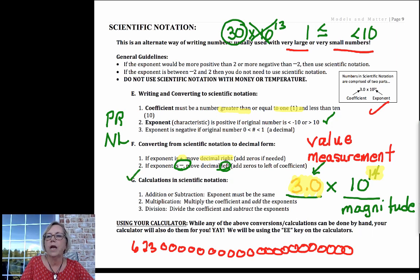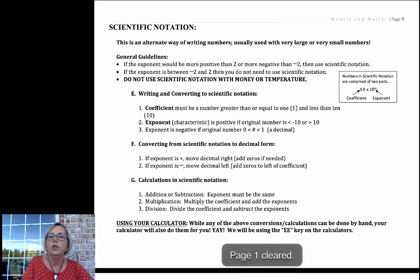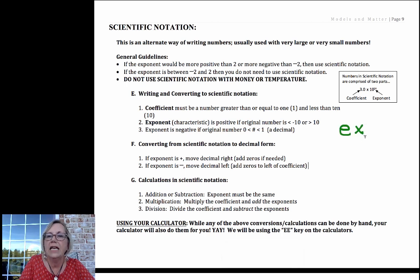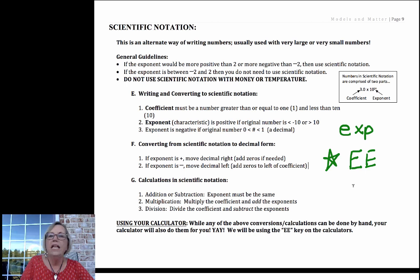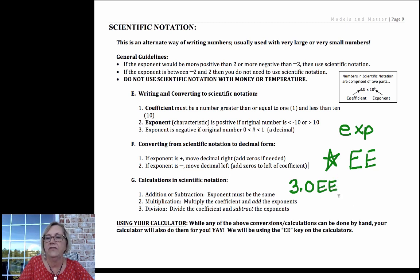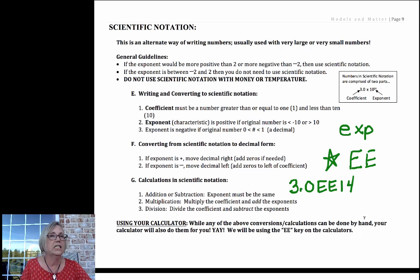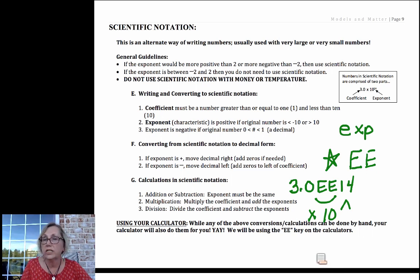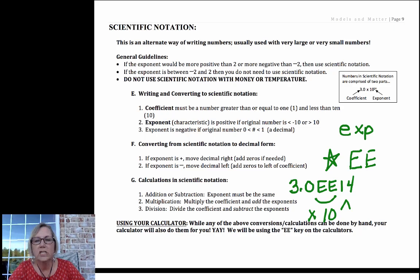One word of caution: I'm going to go over how to do these without a calculator. But when you use a calculator, look for either an exponent key or, much more likely, an EE key. That EE key takes care of the times and the 10. So for 3.0 times 10 to some power, I'd type 3.0, then hit EE, then type the exponent — no multiplication sign, no 10, no caret. If you don't do this, you may be adding factors of 10, especially during division. Do it by hand first, then check with your calculator.